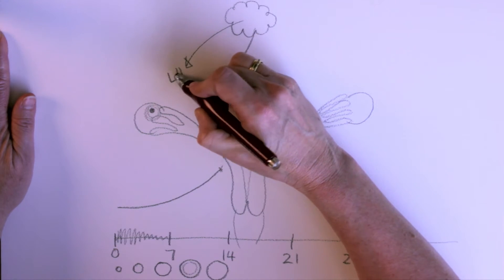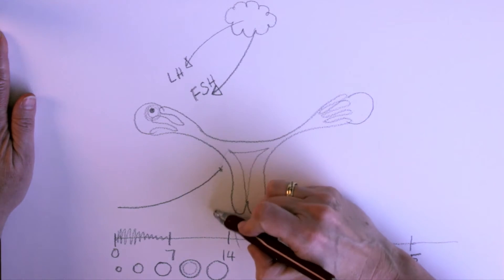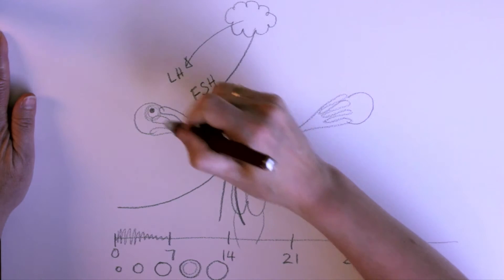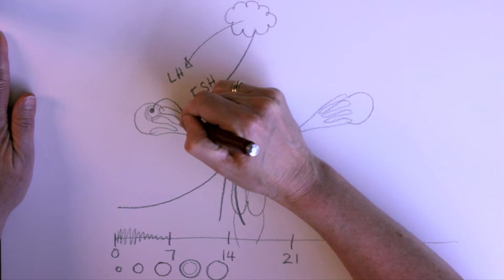luteinizing hormone, which goes to your ovary, and a big surge like this goes on, and your egg pops out, so out pops the egg, and goes down your tube.